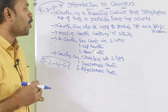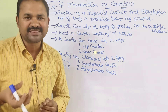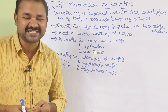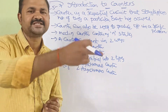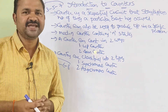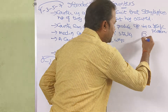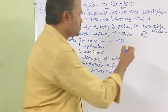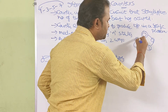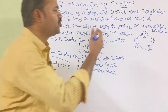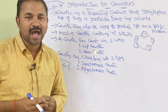A mod-n counter can contain n states. If you take a mod-3 counter, it contains 3 states: 0, 1, 2 — and from state 2 we go back to state 0. For a mod-5 counter, there are 5 states: from 0 to 1, 1 to 2, 2 to 3, 3 to 4, and again from 4 back to 0. So a mod-n counter can have n states.